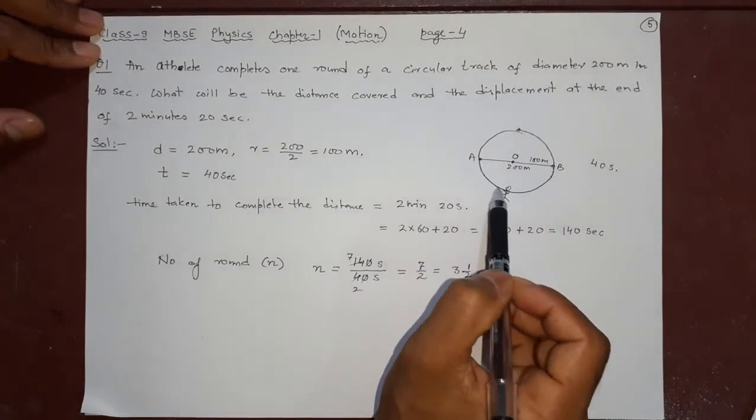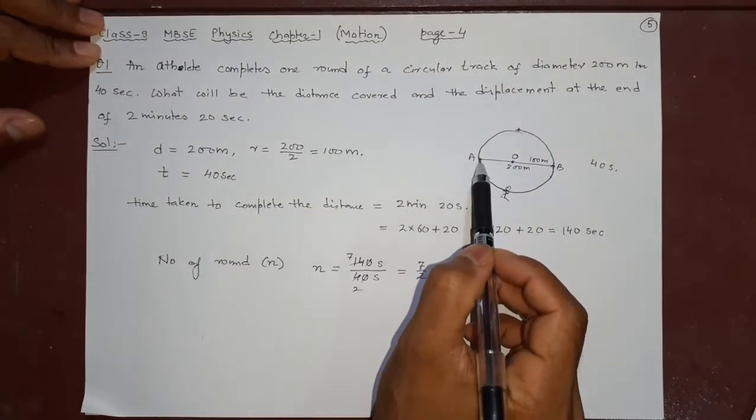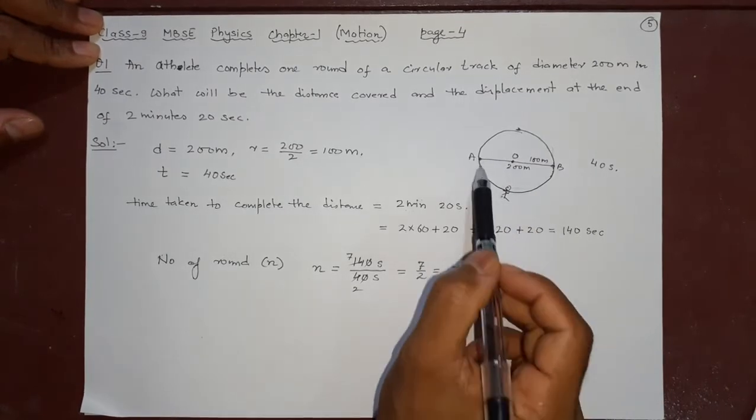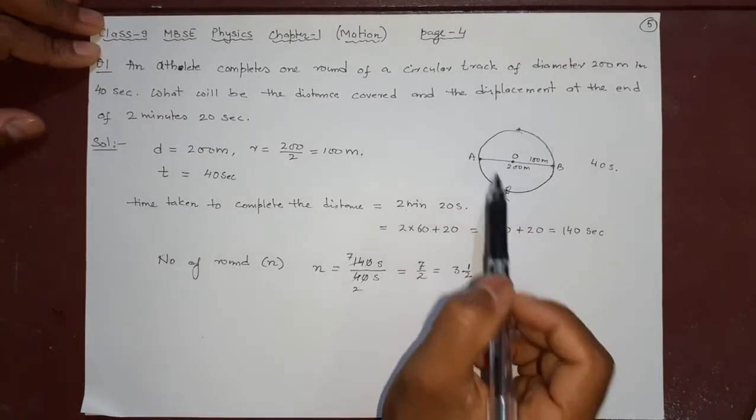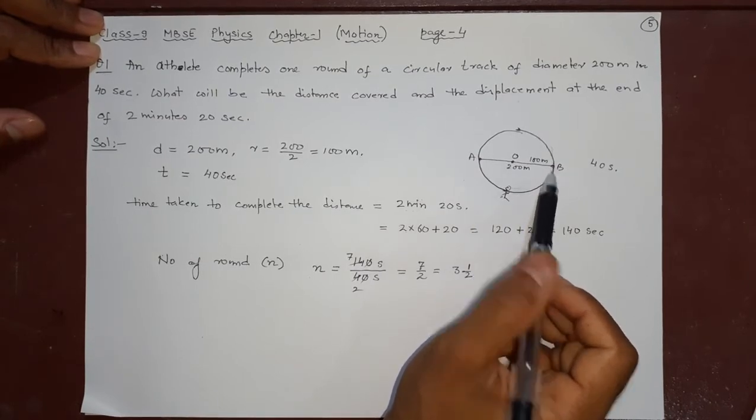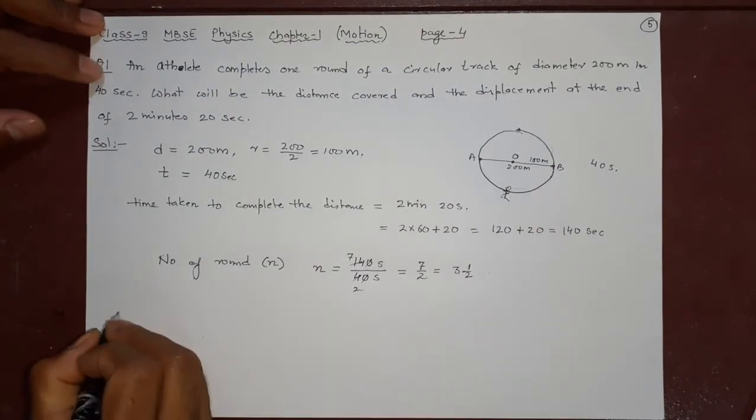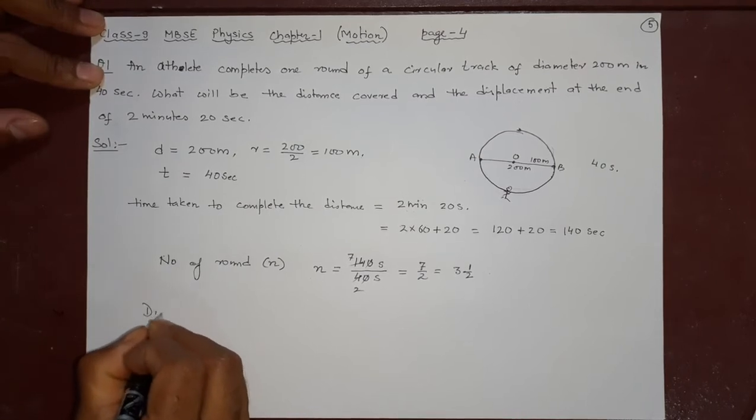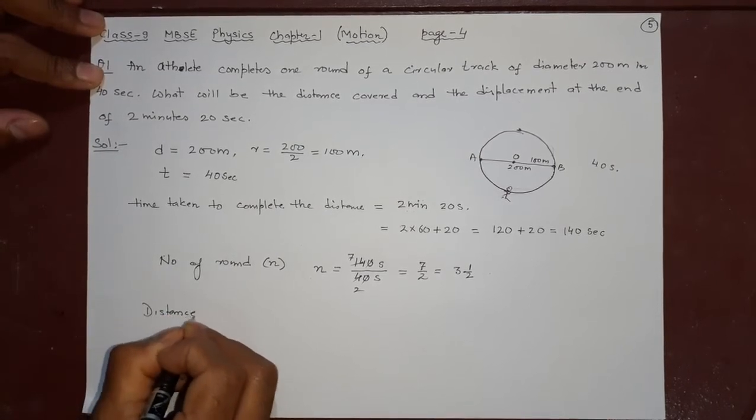Suppose it starts from here, 1 round, then 2 round, again 3 round, and again here it stops, 3 and half. So what will be the distance? Now that you have to write.